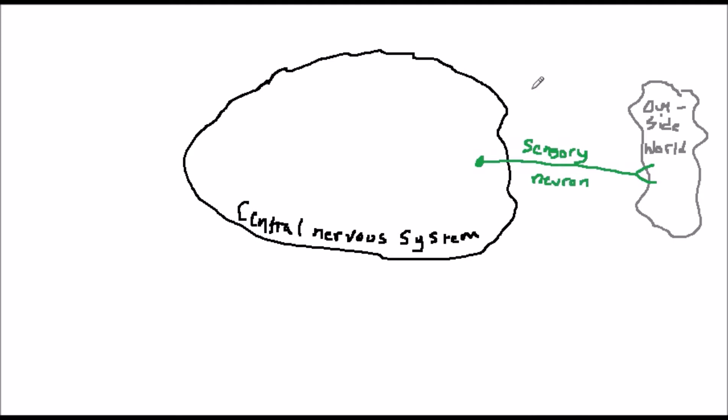Once in the central nervous system, the signal is further processed by other neurons, which are called interneurons. Many simpler responses, for example reflexes, are processed by the spinal cord, but more complex ones, particularly if they require voluntary action, are processed by the brain.